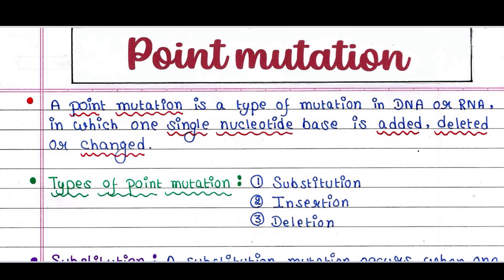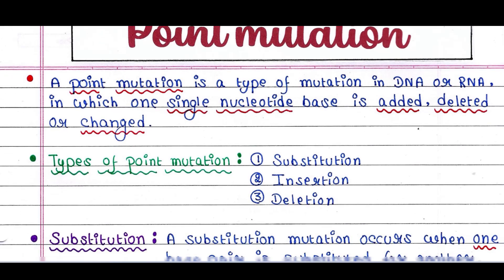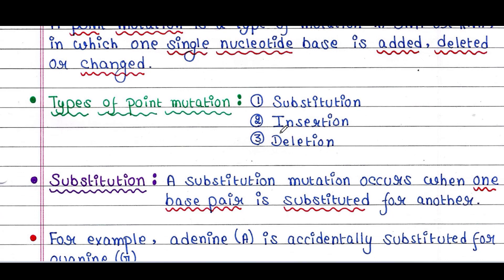Welcome back to my channel, Voice of Malinky. Today we will talk about point mutation. If you are new to my channel, please subscribe, and if you like my video, please like, comment, and share. A point mutation is a type of mutation in DNA or RNA in which one single nucleotide base is added, deleted, or changed. There are different types of point mutation: substitution, insertion, and deletion — we will talk about them one by one.